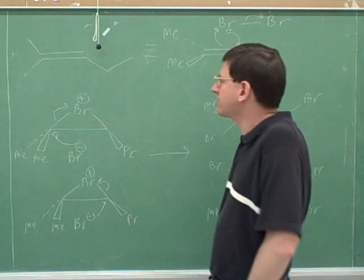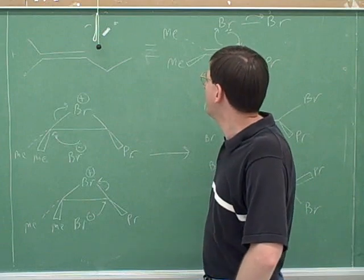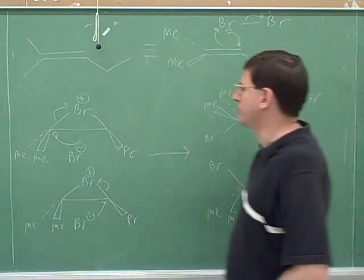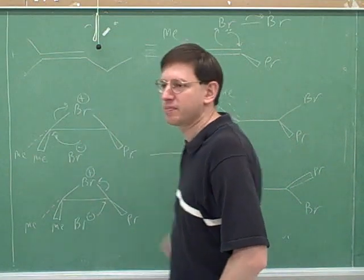For non-cyclic alkenes, my preferred method is to draw the substituents on wedges and dashes. And then we draw the halogens in the plane of the page.